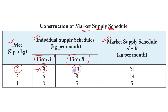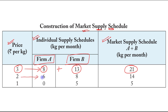At a price of rupees 3 per kg, Firm A produces 8 kg per month and Firm B produces 13 kg per month. The market supply at rupees 3 is obtained by adding these two quantities: 8 plus 13 equals 21 kg per month.